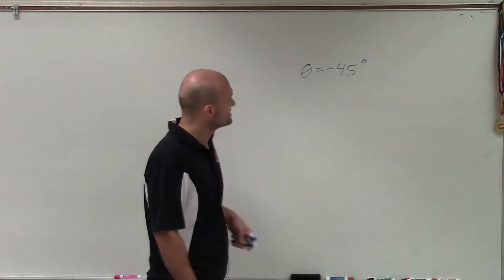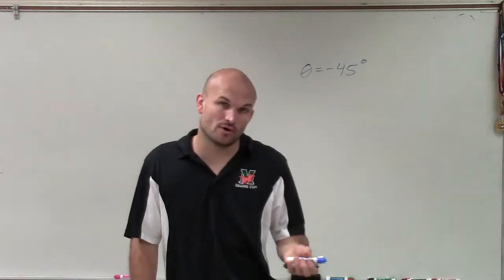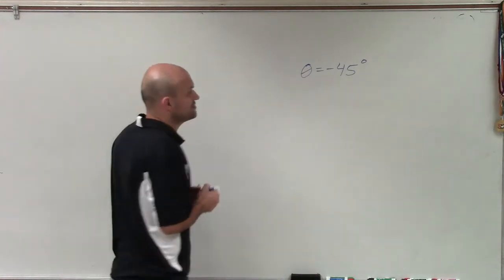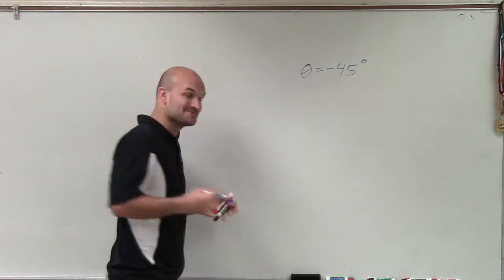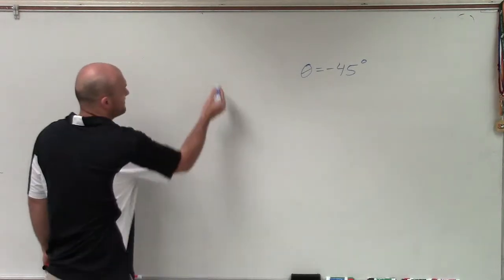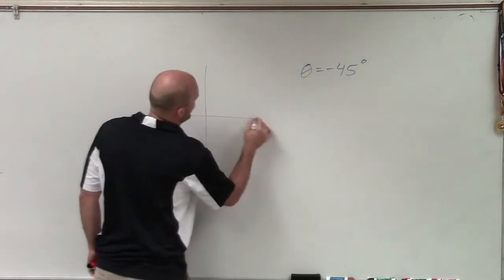Welcome. So here we go. What I have in this case is an angle, negative 45 degrees. And what I want to do is determine the smallest positive coterminal angle and smallest negative coterminal angle that are going to have the exact same initial and terminal sides.